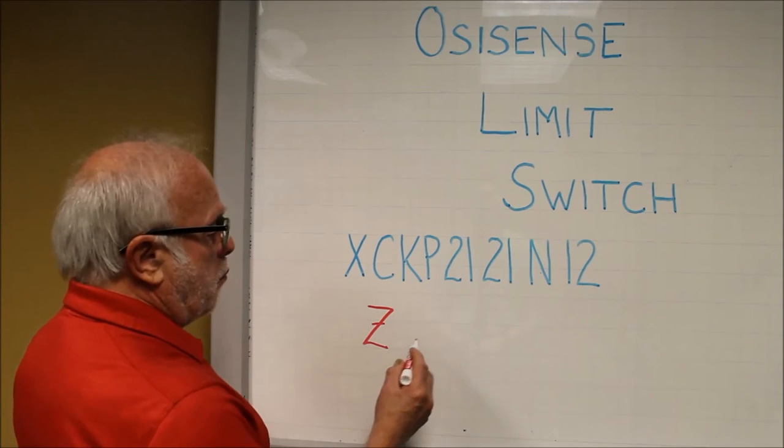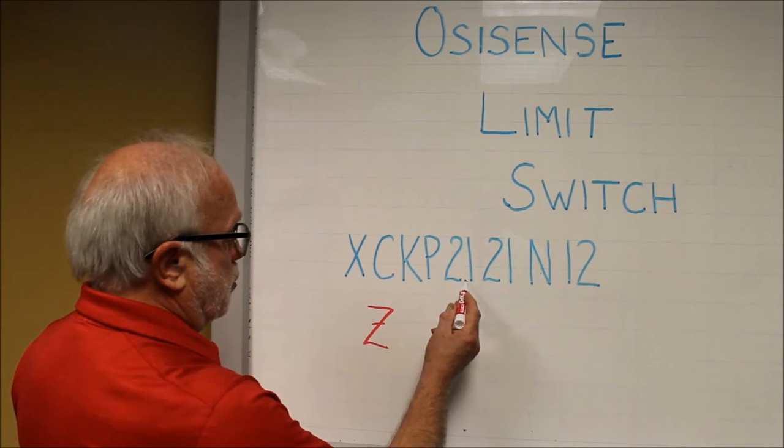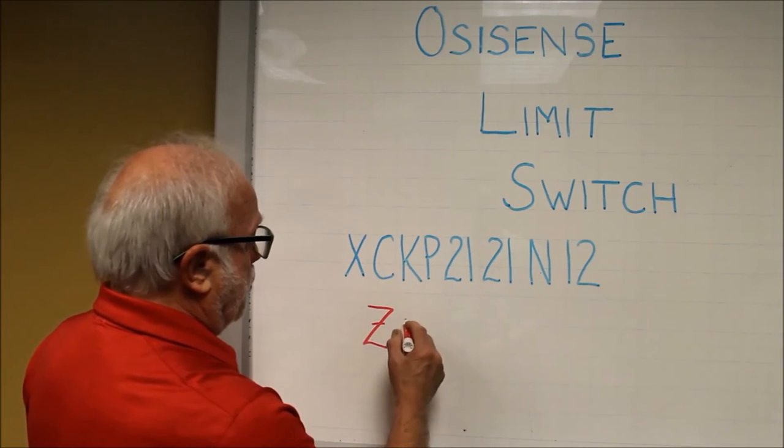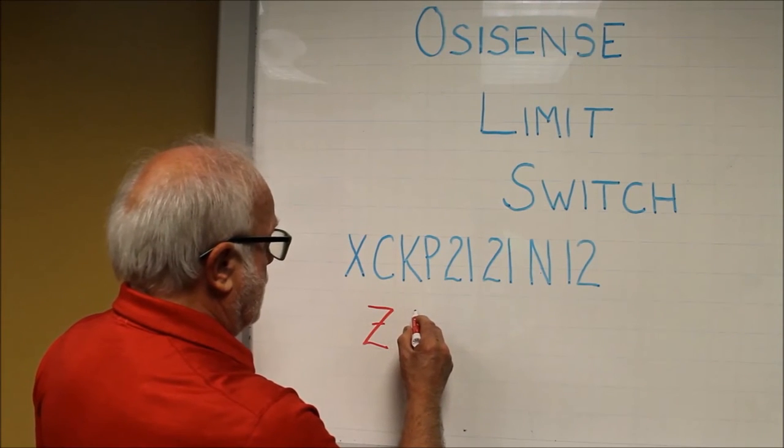The contact block used in the switch is identified by a two-digit code. The frame of that switch is identified by a series of letters, in this case, a ZCP.